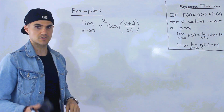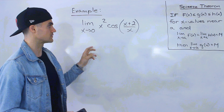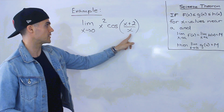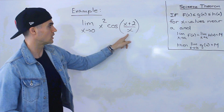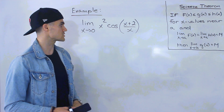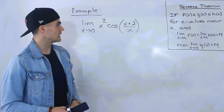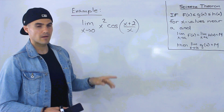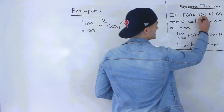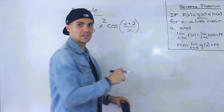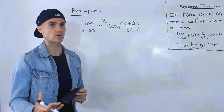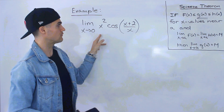Notice that we can't make a direct substitution of 0 into this function. Why? Because of this x in the denominator — if we plug in 0, we're going to be dividing something by 0, and we can't do that. So we're going to have to do something else. As I mentioned in the squeeze theorem overview video, sometimes g(x) is a complex function that we don't know how to graph, and this is an example of that.